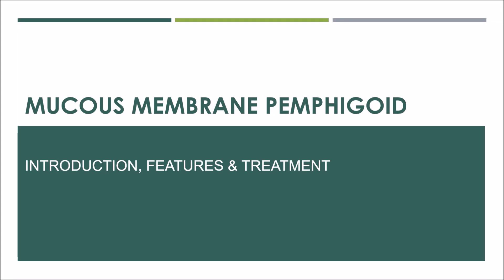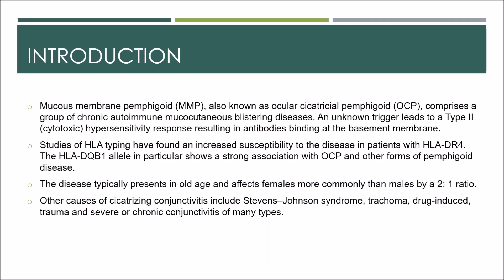Mucous membrane pemphigoid, also known as ocular cicatricial pemphigoid, comprises a group of chronic autoimmune mucocutaneous blistering diseases. An unknown trigger leads to a type 2 cytotoxic hypersensitivity response, resulting in antibodies binding at the basement membrane zone, activation of complement, and recruitment of inflammatory cells, with localized separation of the epidermis from the dermis at the basement membrane zone and subsequent progression to scarring.